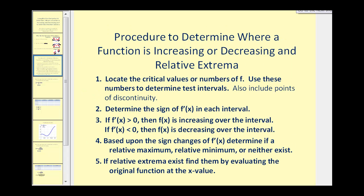The general rules to determine where a function is increasing or decreasing, as well as how to find relative extrema, are as follows. Step one: find the critical numbers, which is where the first derivative is equal to zero or it's undefined, and then use these numbers to determine test intervals. Then determine the sign of the first derivative in each interval. If the first derivative is positive, the function is increasing over the interval. If it's negative, it's decreasing over the interval.